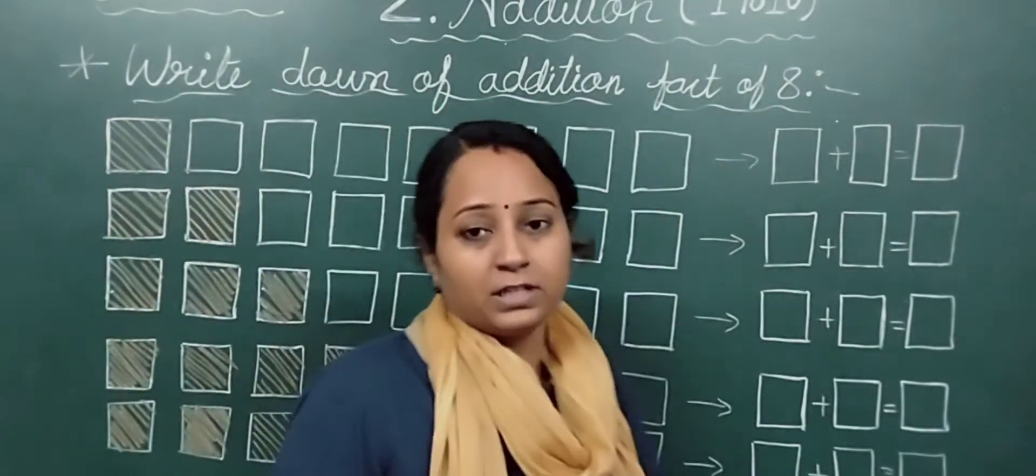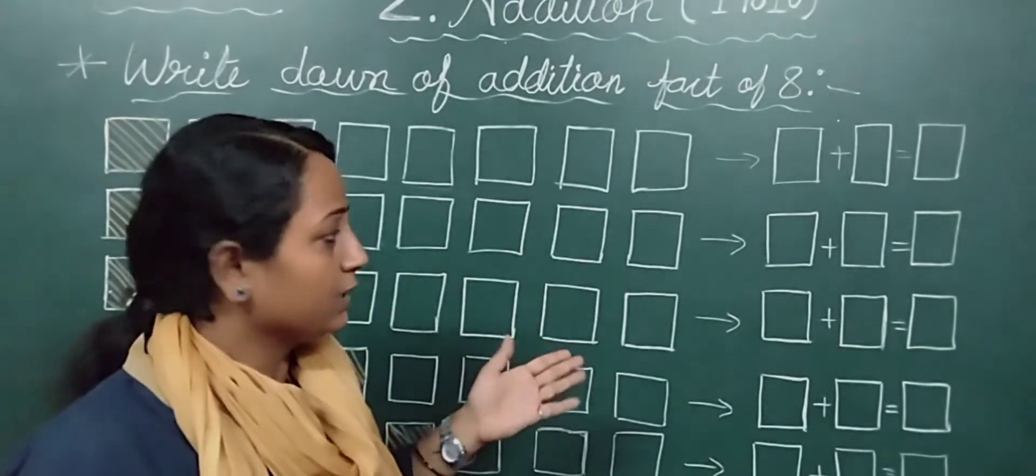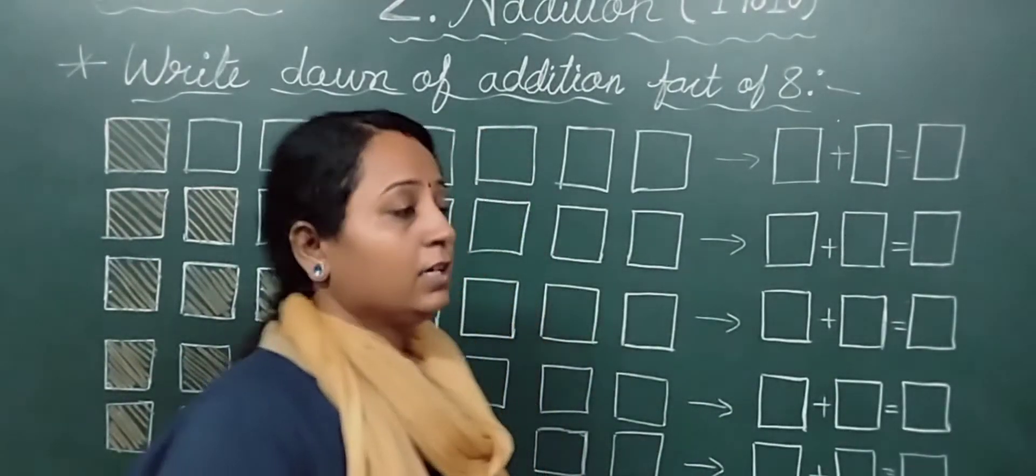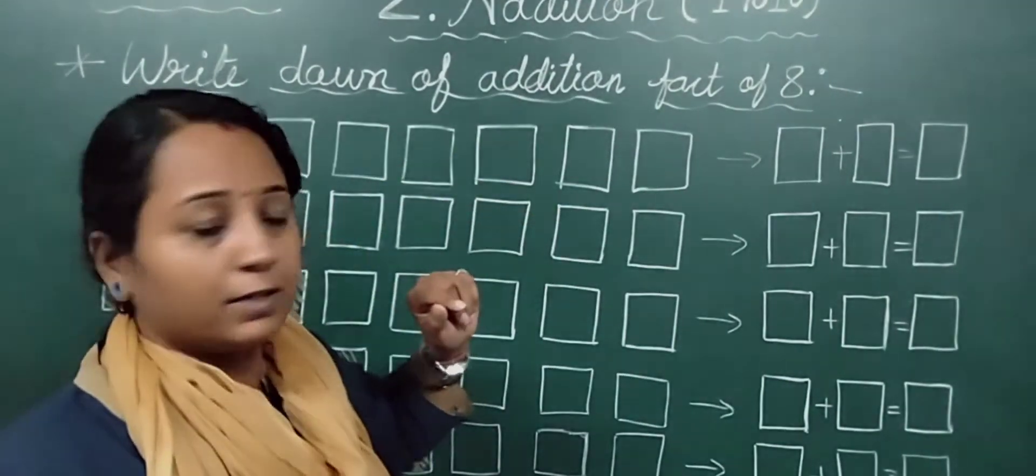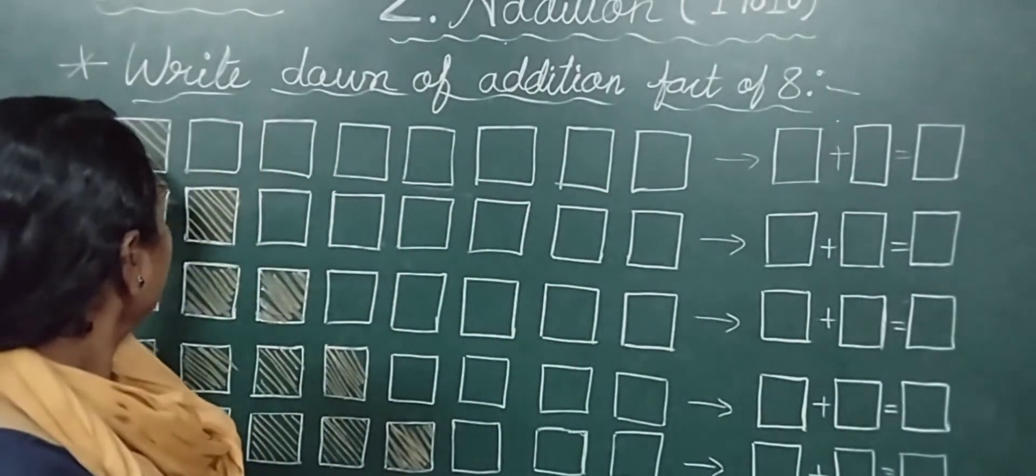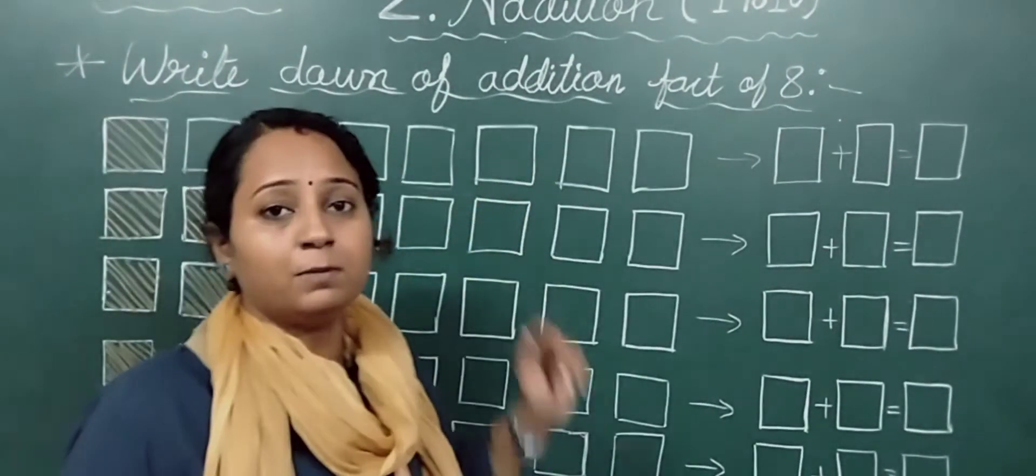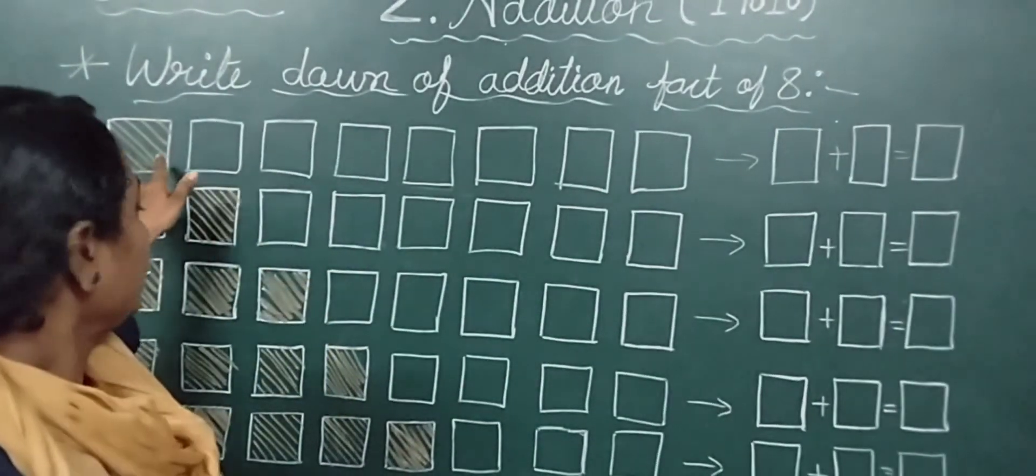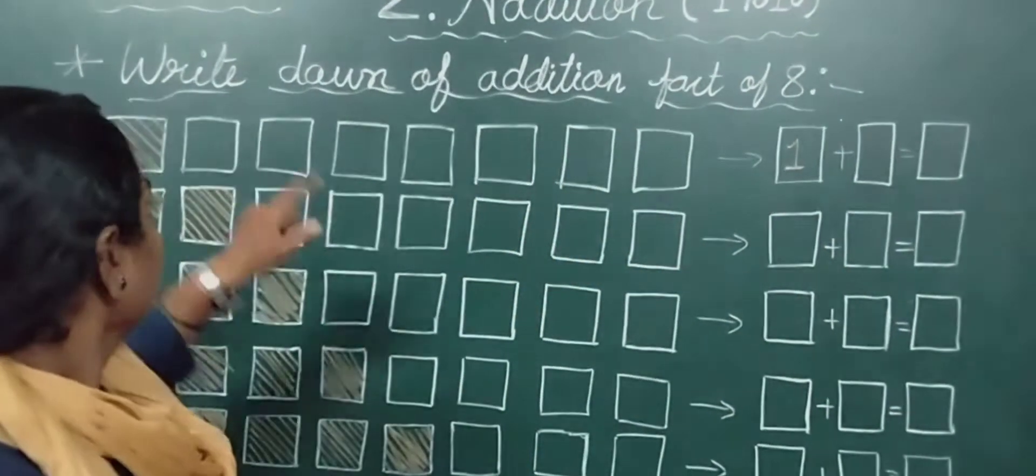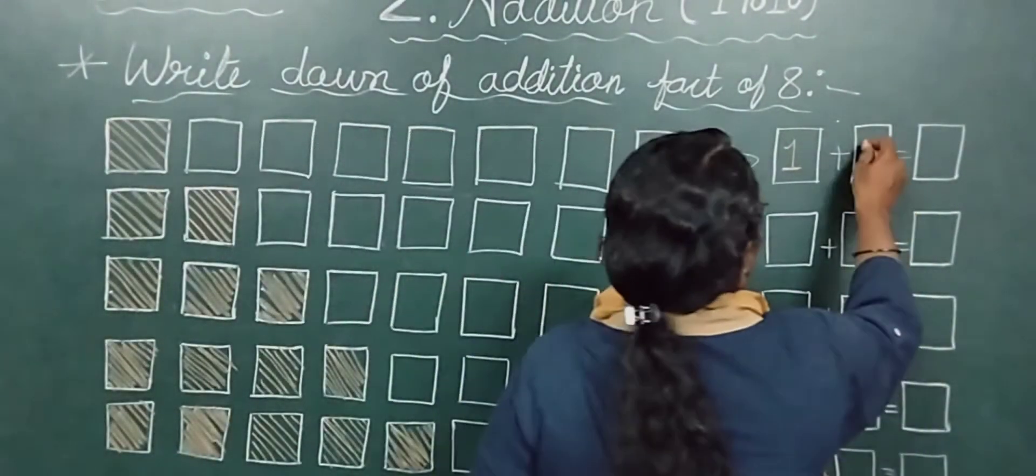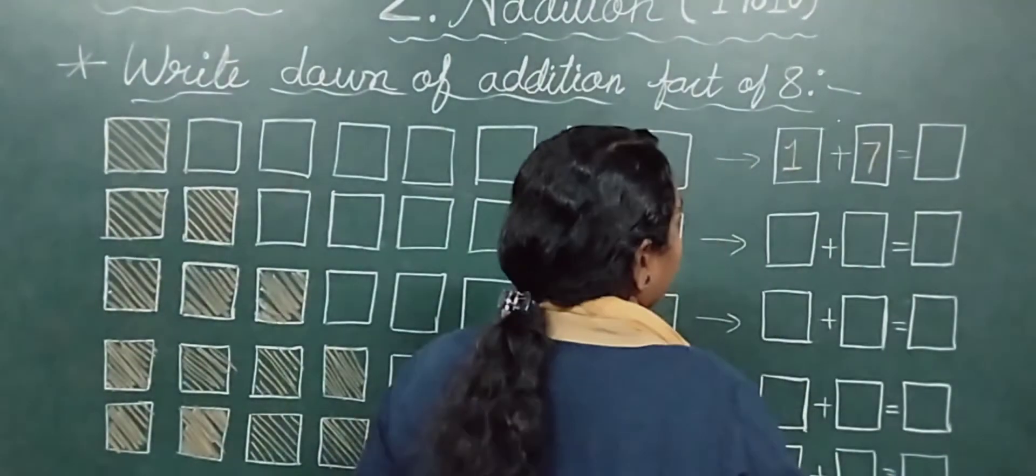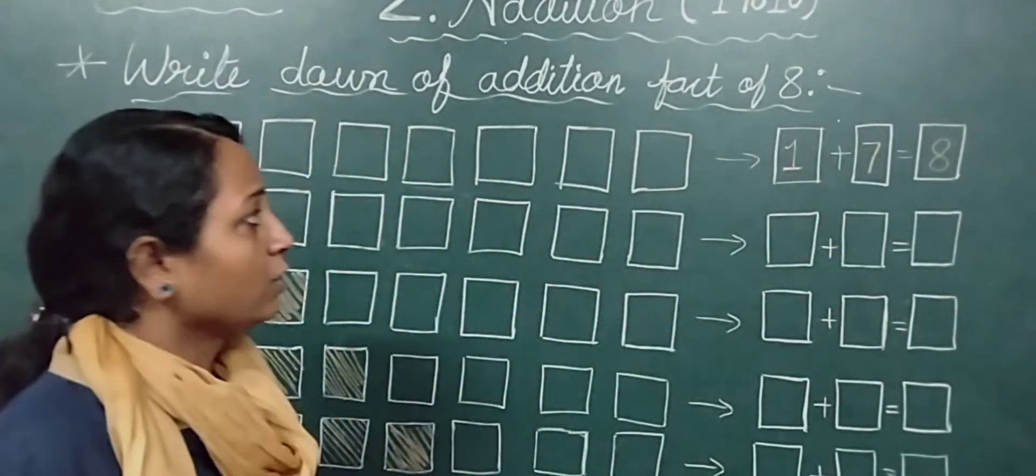You will do the next exercise. Write down addition facts of 8. Here, addition facts of 8. I will draw boxes: 1, 2, 3, 4, 5, 6, 7, 8. Eight boxes. I will use different colors. Some I will color, and the rest will be plain. Some colored, and the rest plain.